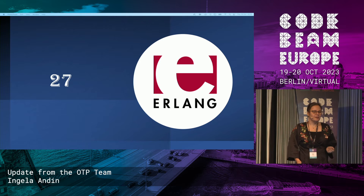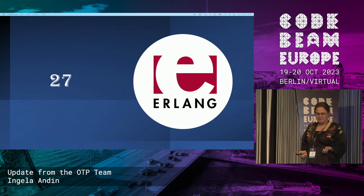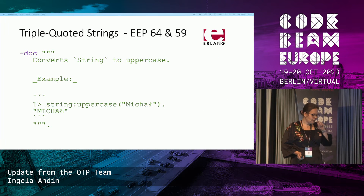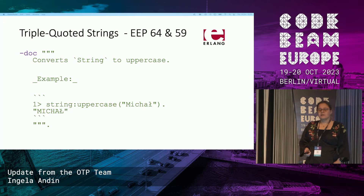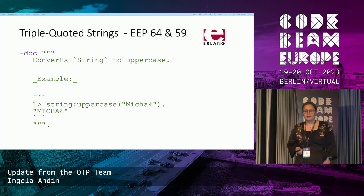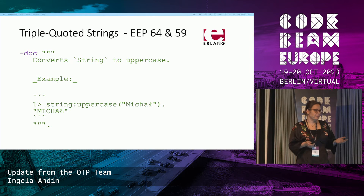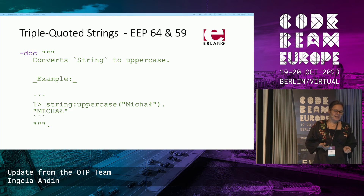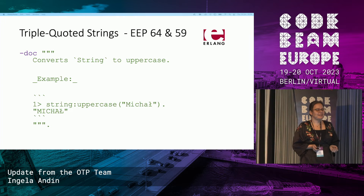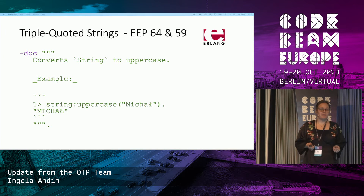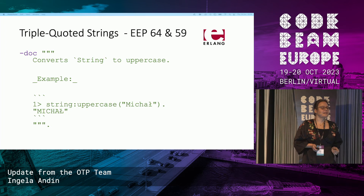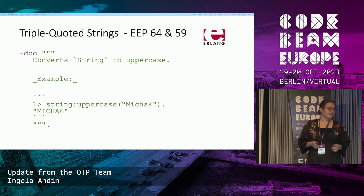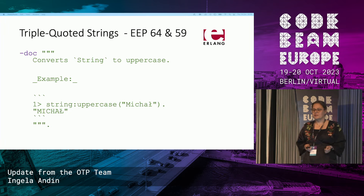Moving on to OTP 27: we are planning to transform our documentation to make a more consistent and better look and feel. To do that, we would like to have triple quoted strings so that we can make multi-line strings in a nice and easy way in our documentation chunks.